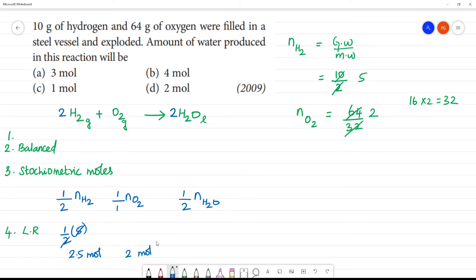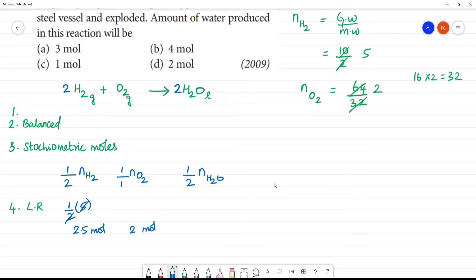So which is the limiting reagent now? Either oxygen or hydrogen? Oxygen is limiting reagent. So this is 2.5. Oxygen is limiting reagent.